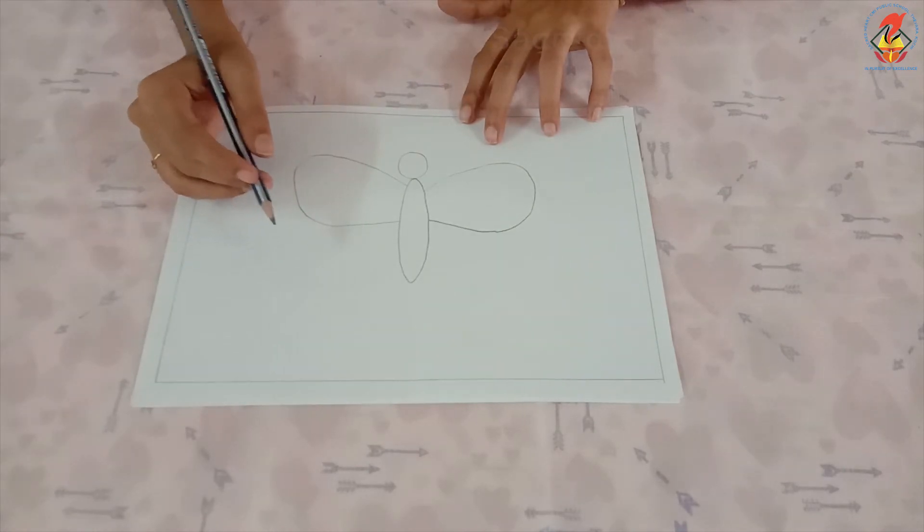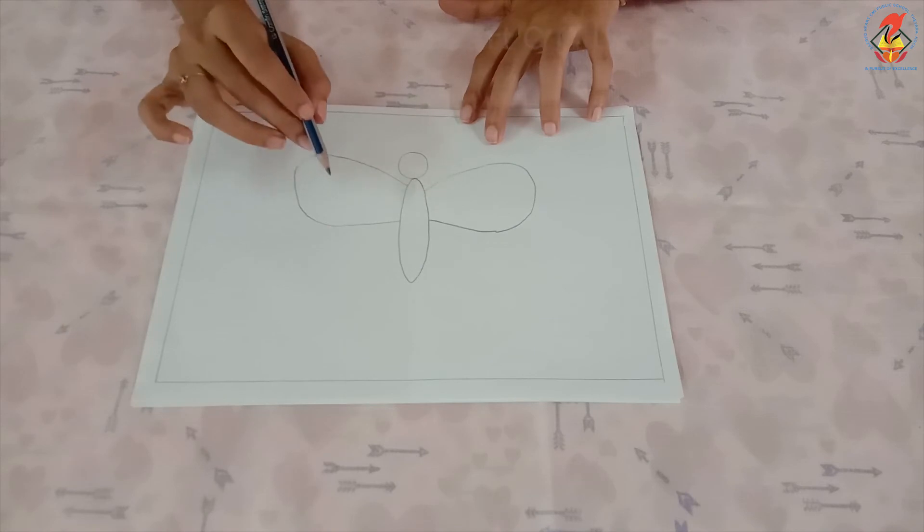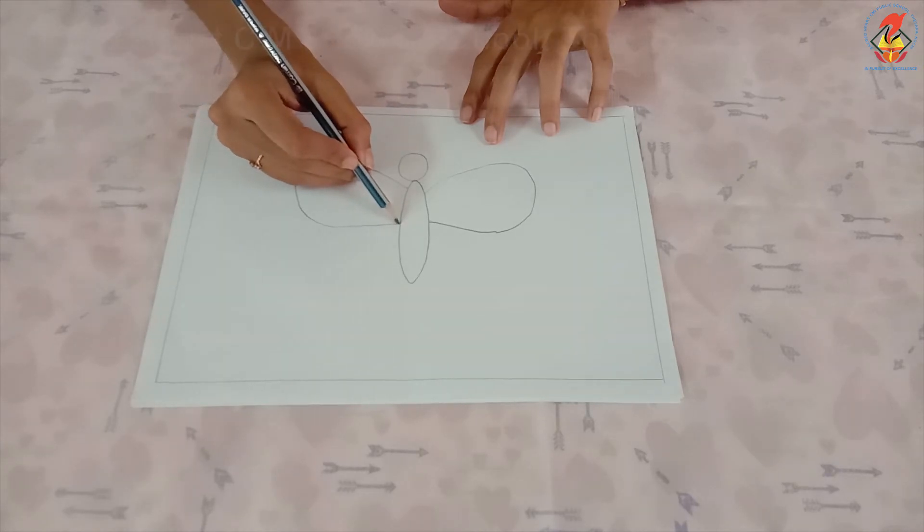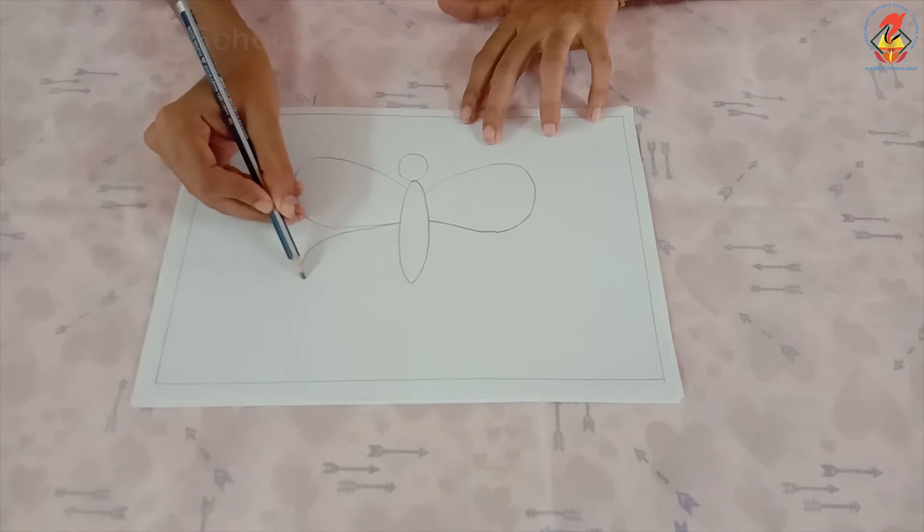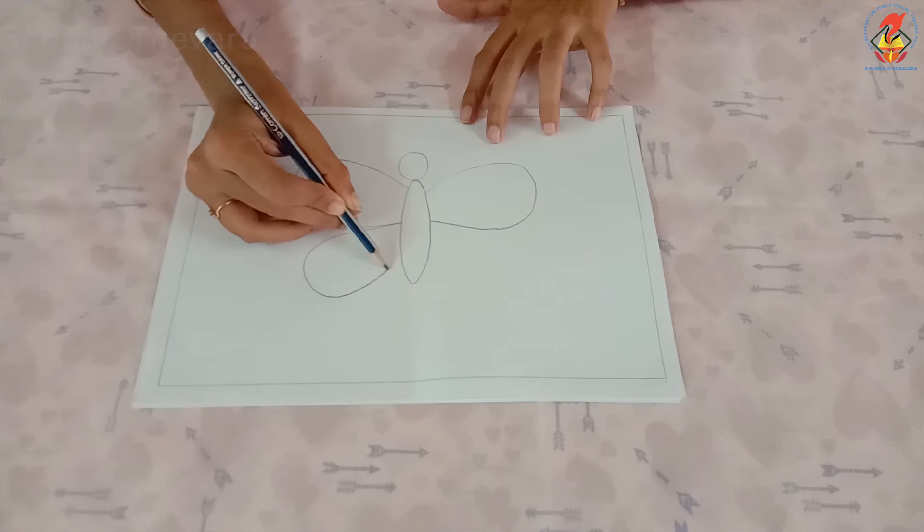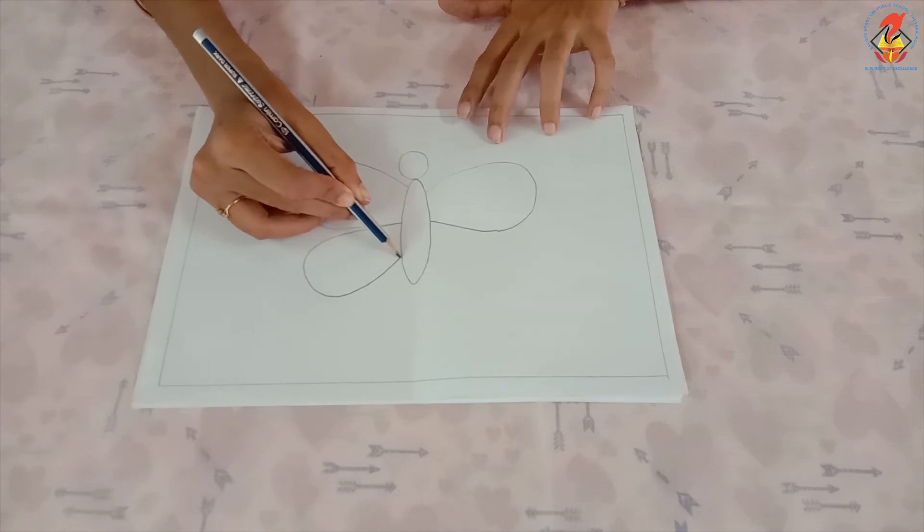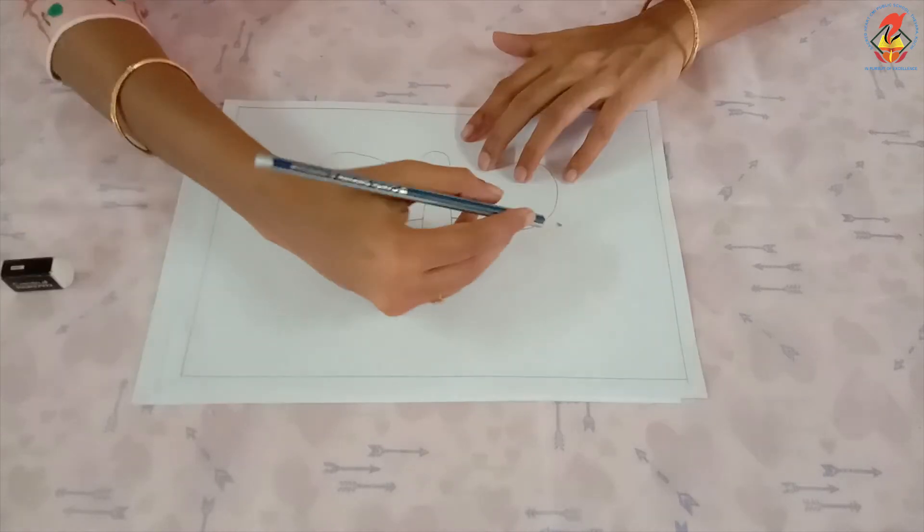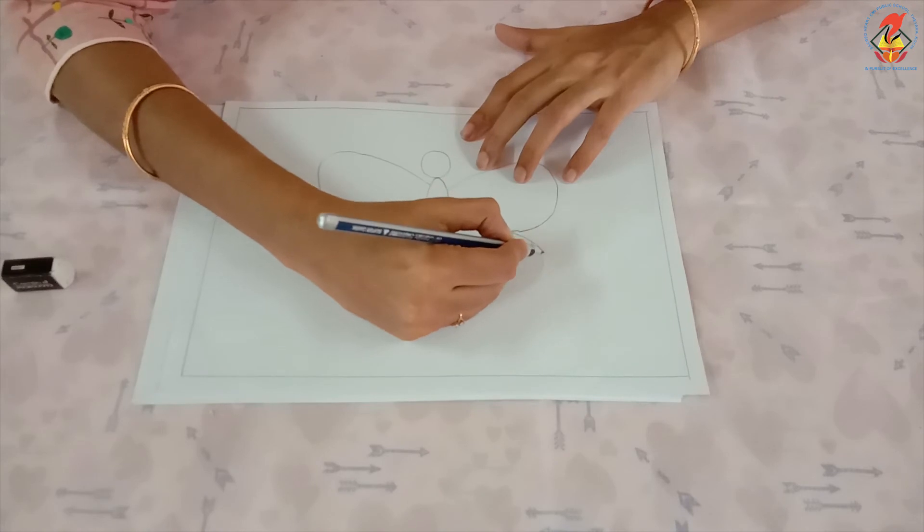To create the smaller lower wings, draw a curved shape starting from the middle and connect to the bottom of the body. Repeat on the other side.